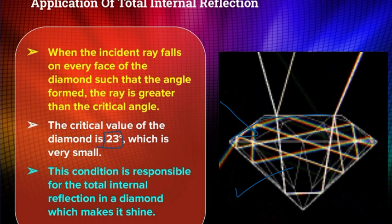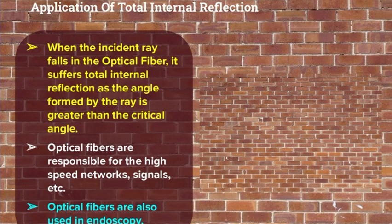If a diamond is cut irregularly, the shine goes because light will escape. So the light must remain inside for the diamond to shine, and that is achieved through total internal reflection. Total internal reflection is also used in endoscopy and optical fibers that carry signals. In optical fibers, the angle formed by the ray is bigger than the critical angle, so light undergoes total internal reflection and travels through the fiber. Networks, signals, and endoscopy all rely on optical fibers where total internal reflection takes place.